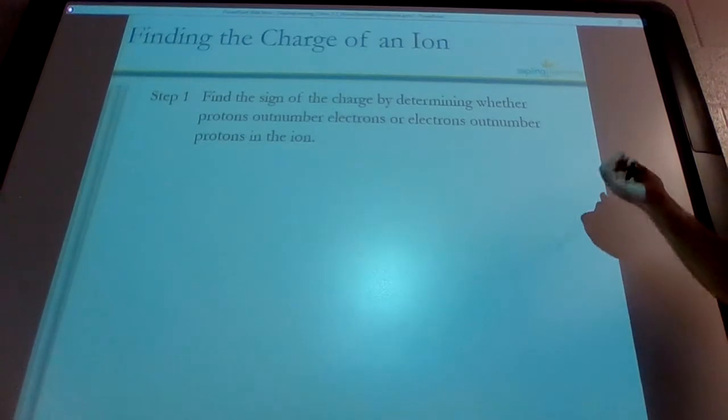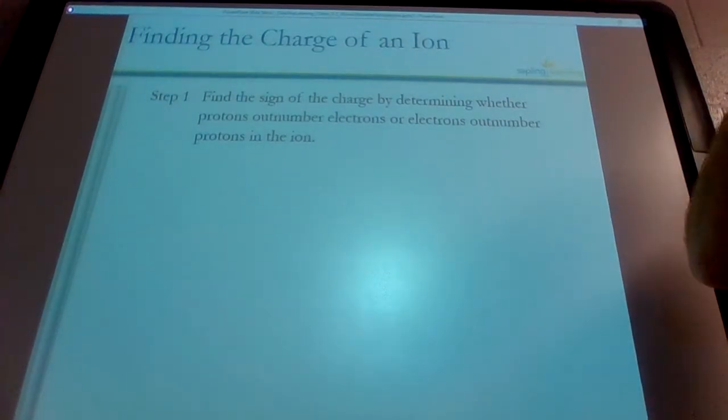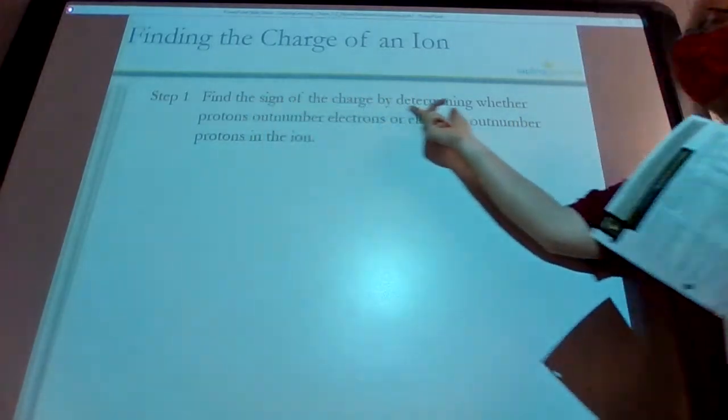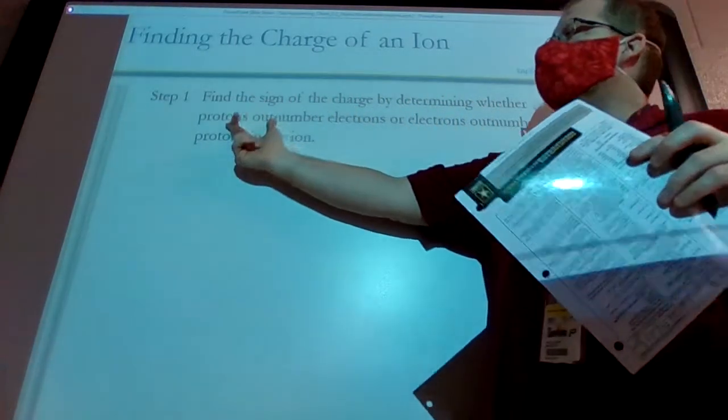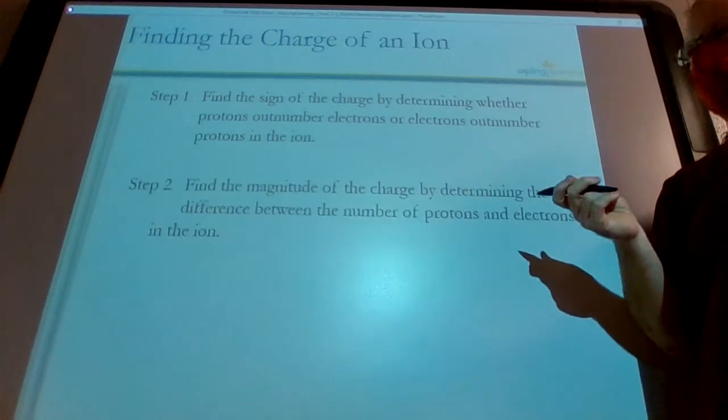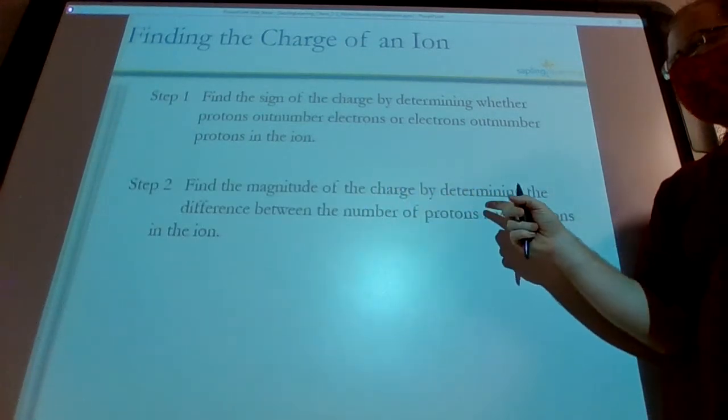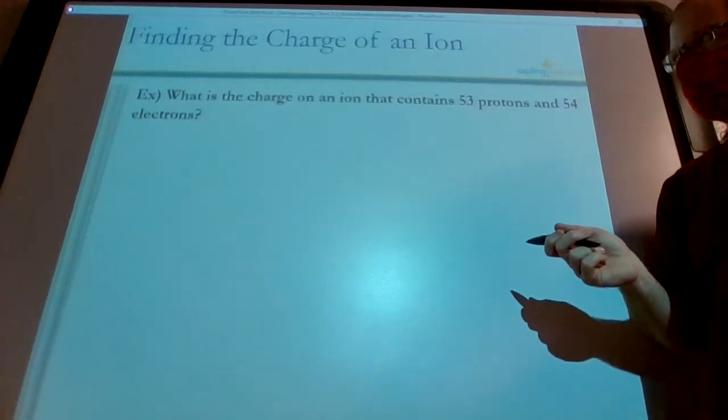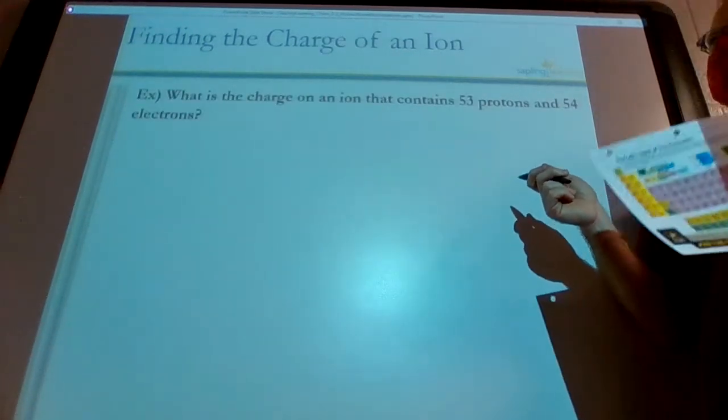And they just basically at the bottom there said sum up your positives versus your negatives. Whichever you have more of, that's what you have. So find the sign of the charge by determining whether protons outnumber electrons. Step two, find the magnitude of the charge by determining the difference between the number of protons and electrons. It's pretty simple. So here's an example.